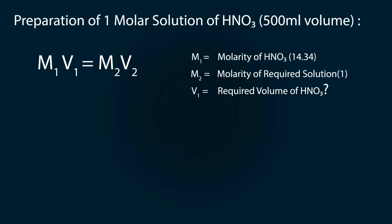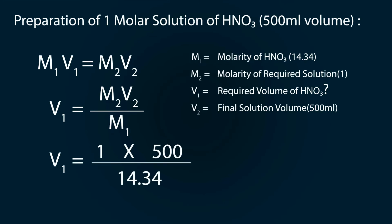required volume of HNO₃, and V₂ is the final volume of the solution which is 500 milliliters. Rearranging the formula and putting the values: 1 multiplied by 500 divided by 14.34, and the volume is 34.87 milliliters.